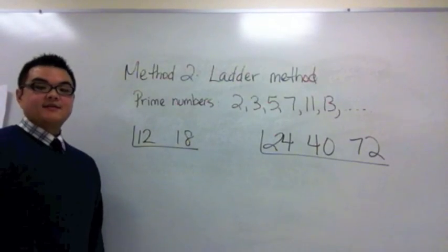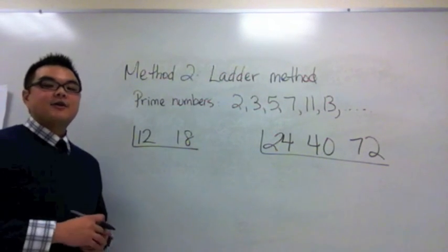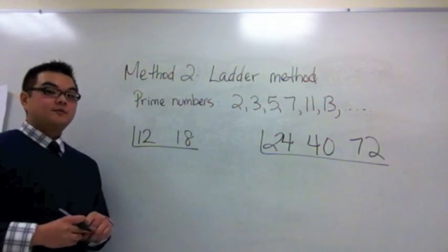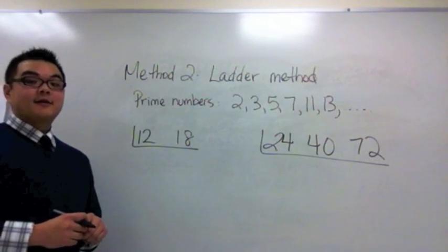The second method to finding the GCF of numbers is the ladder method. In order to use a ladder method you have to know what prime numbers are. Prime numbers are numbers that are only divisible by itself and 1.